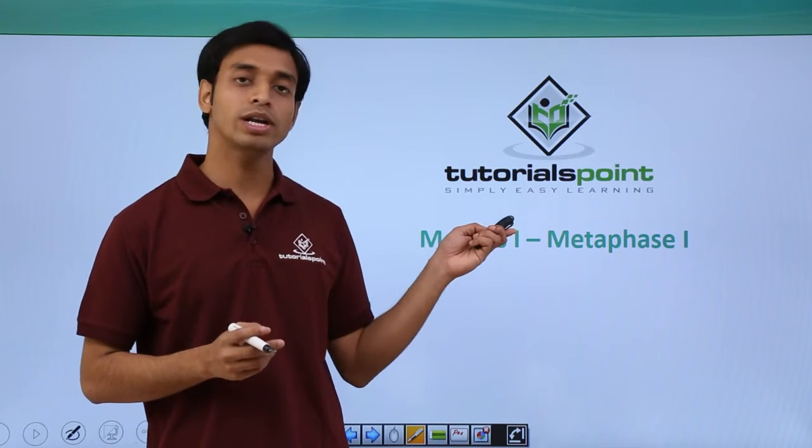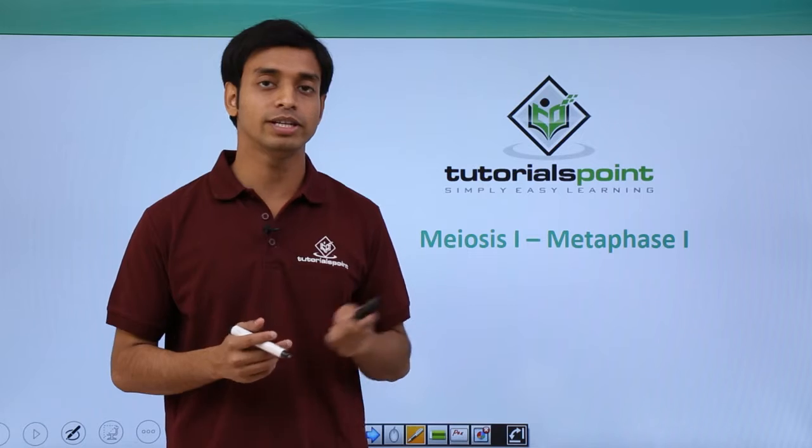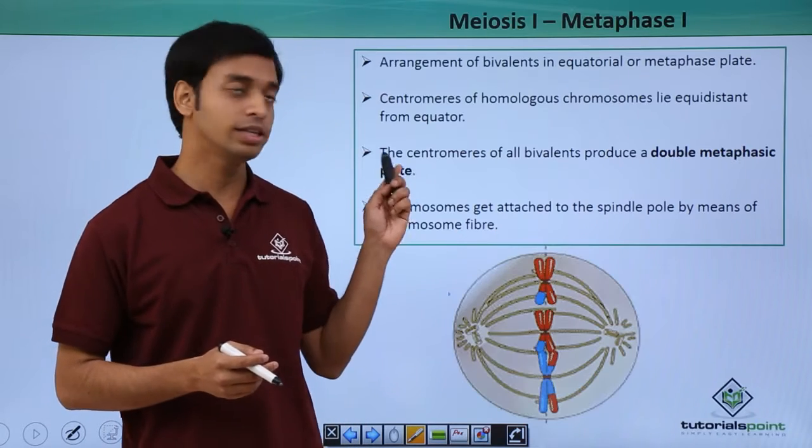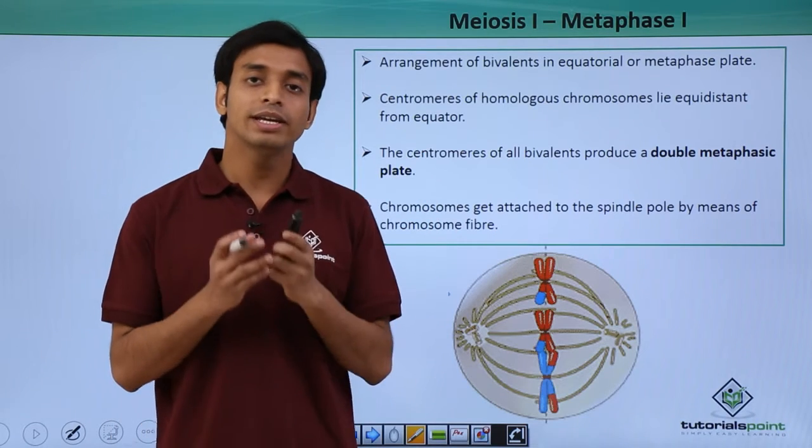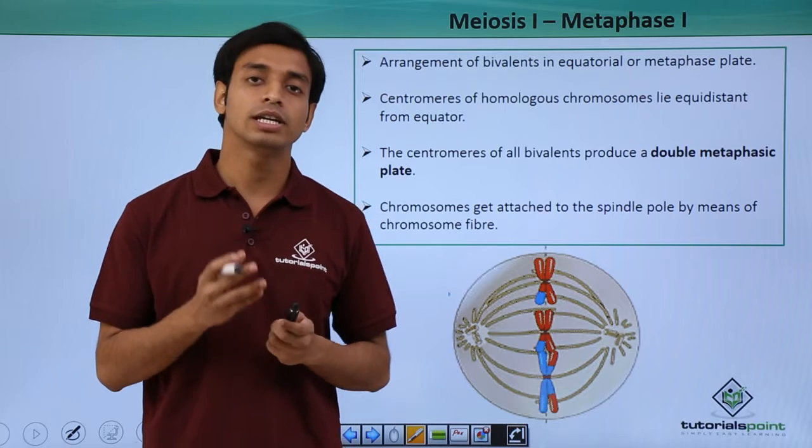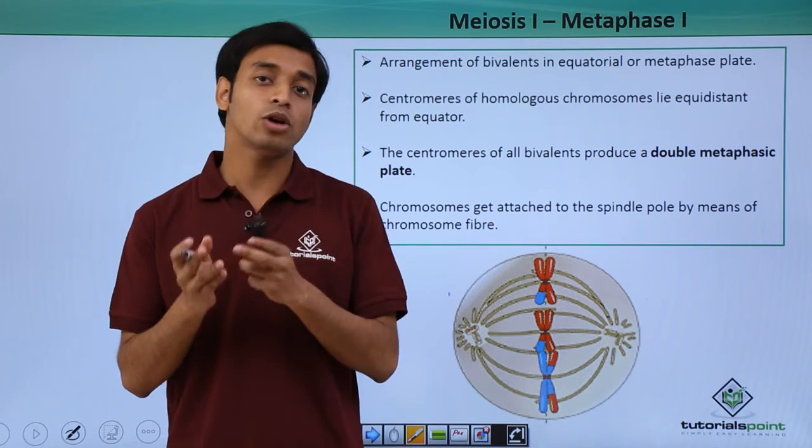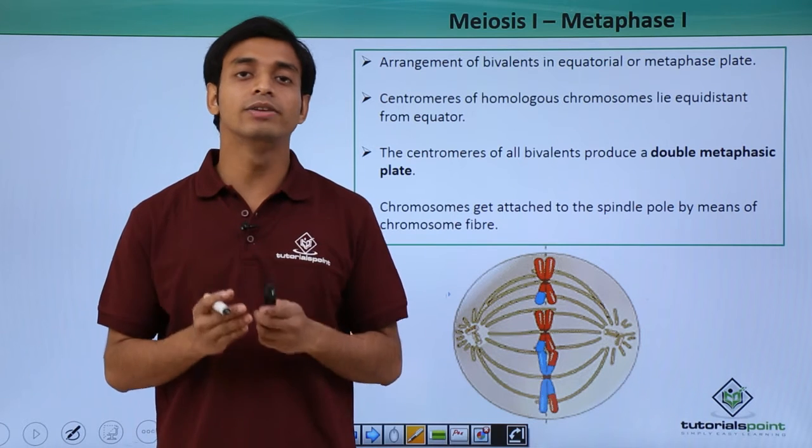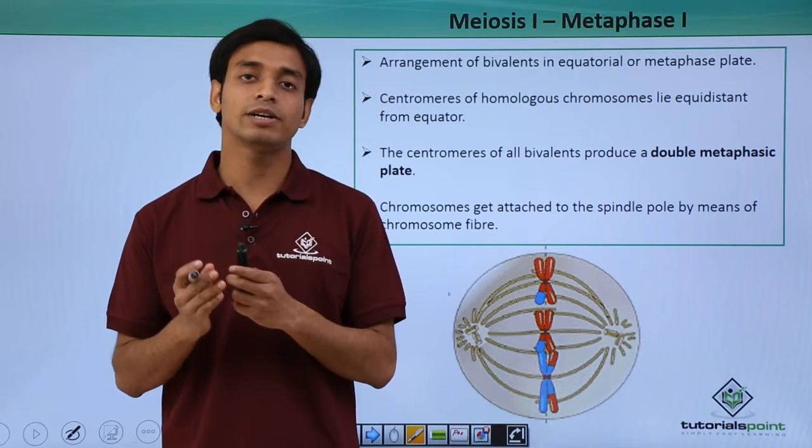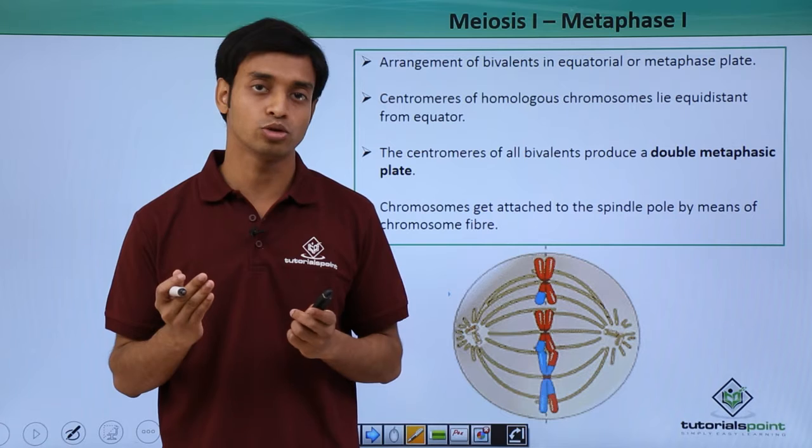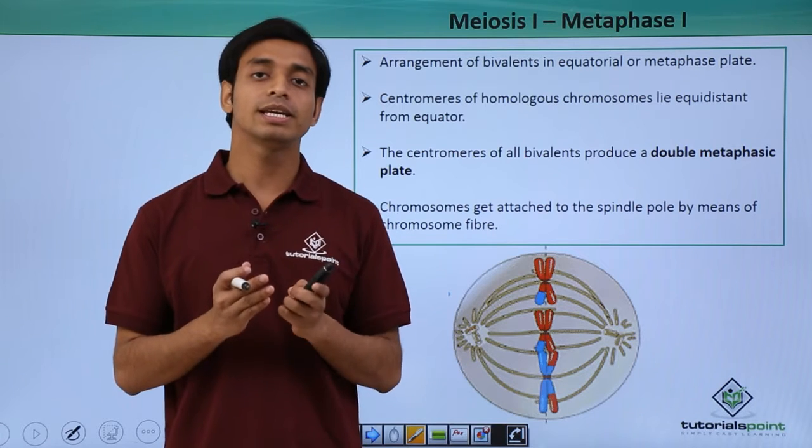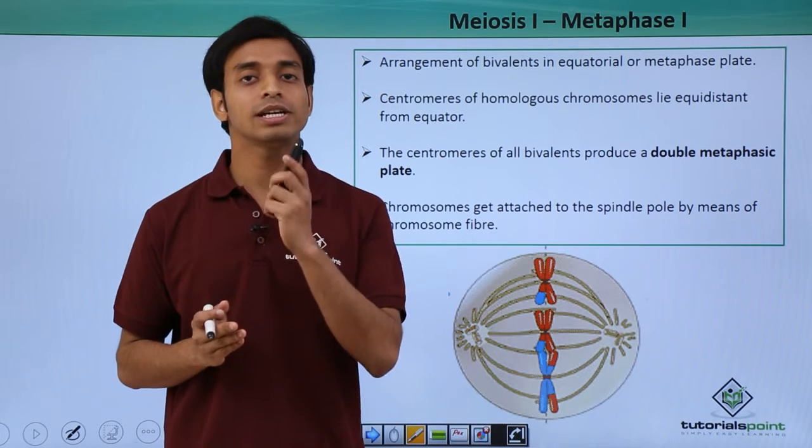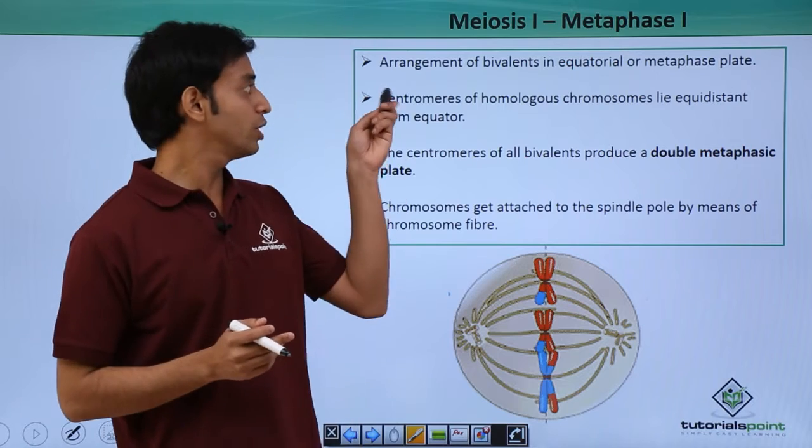Let us see what different activities a cell is performing during this stage. In metaphase I, similar activities happen as in mitosis. The only difference is that in mitosis there was a single chromosome, but here we will be seeing two pairs of chromosomes because there are homologous pairs.